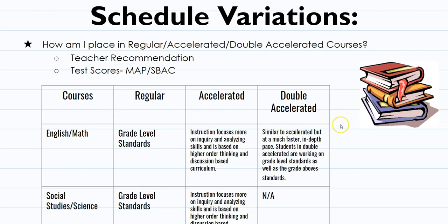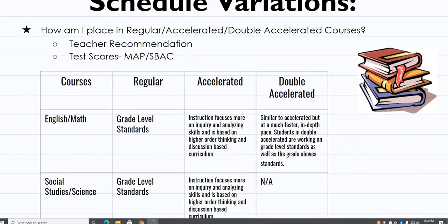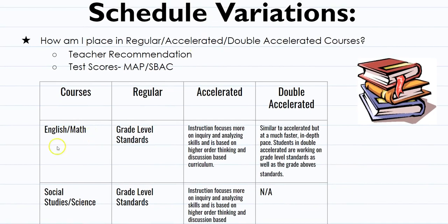Here are your schedule variations — the difference between regular courses, accelerated, and double accelerated. For English and math: regular courses are grade-level standards, while accelerated features extra instruction focused more on inquiry and analyzing skills, based on higher order thinking and discussion-based curriculum. Double accelerated is similar to accelerated but at a much faster, in-depth pace; students work on grade-level standards as well as the standards of grades above. Placement is based on teacher recommendations, your MAP score, and your SBAC/ASPIRE scores.